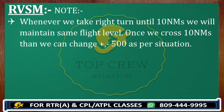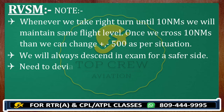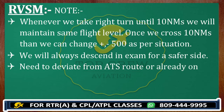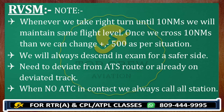Whenever we deviate from our route, we do not change flight level until 10 nautical miles, then we change whatever is the requirement accordingly. We will always descend in the exam for a safer reason. Whenever you need to deviate from ATS route, or are already on a deviated track, and no ATC is in contact — it would be an all-station call all the time. Do remember: need to deviate from ATS route or already on deviated track with no ATC in contact means all-station call, always.